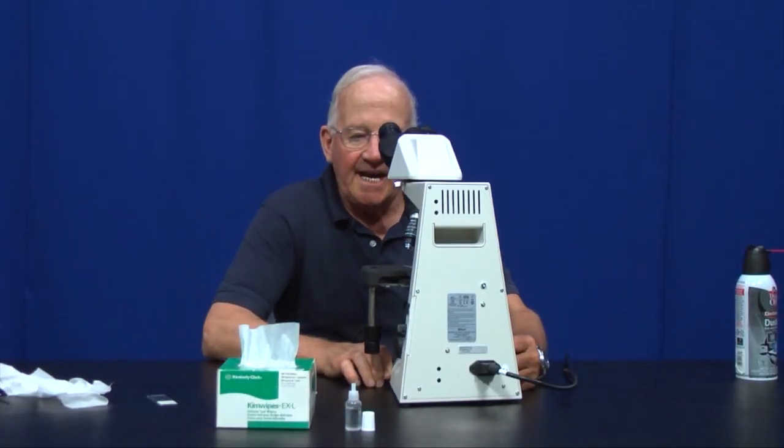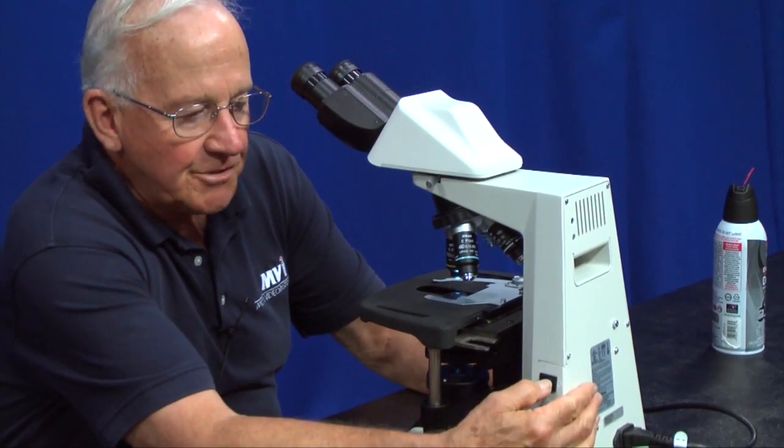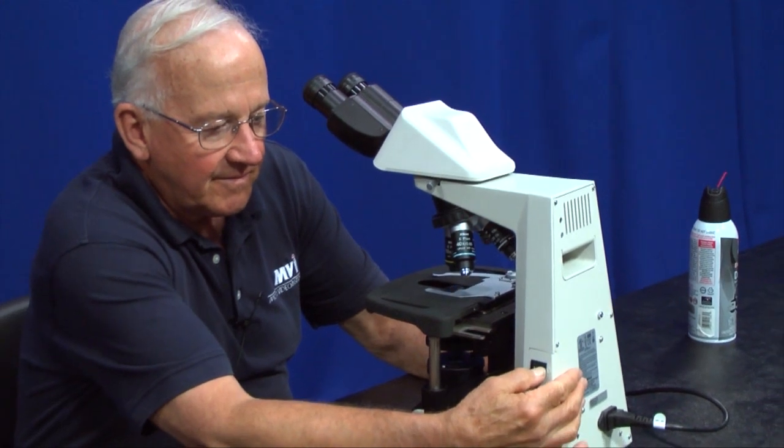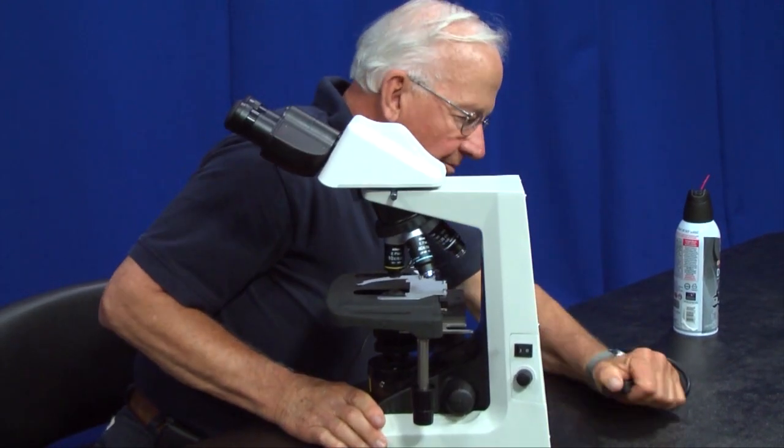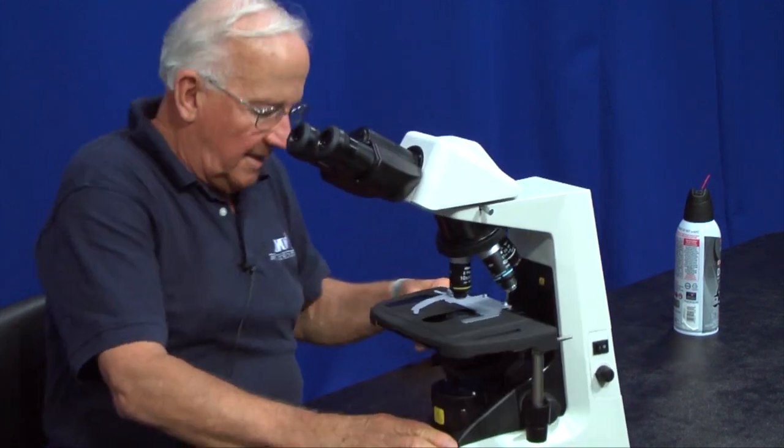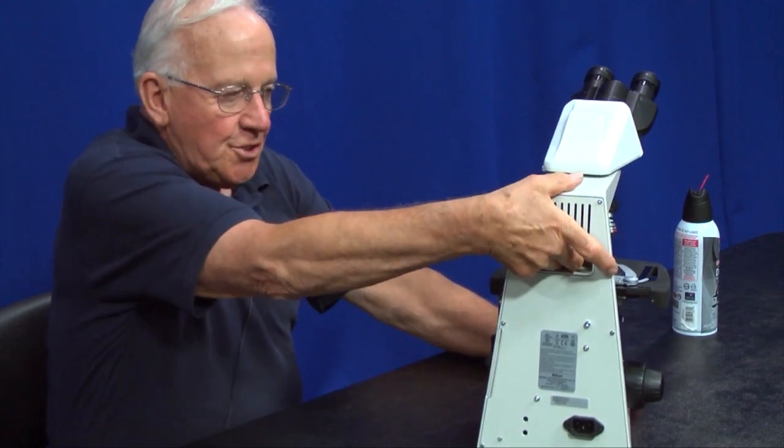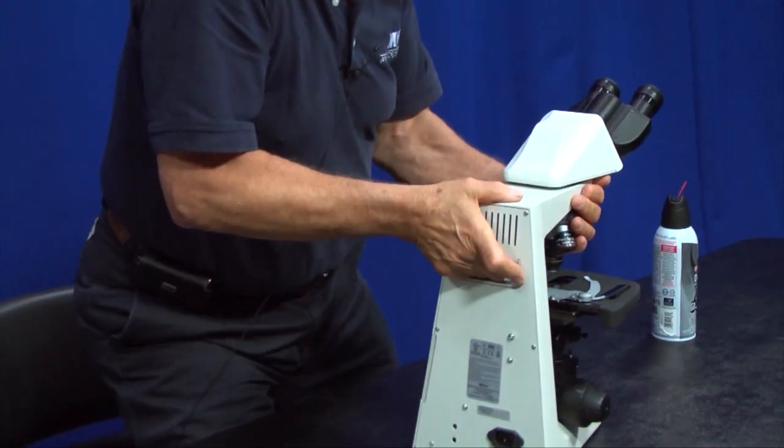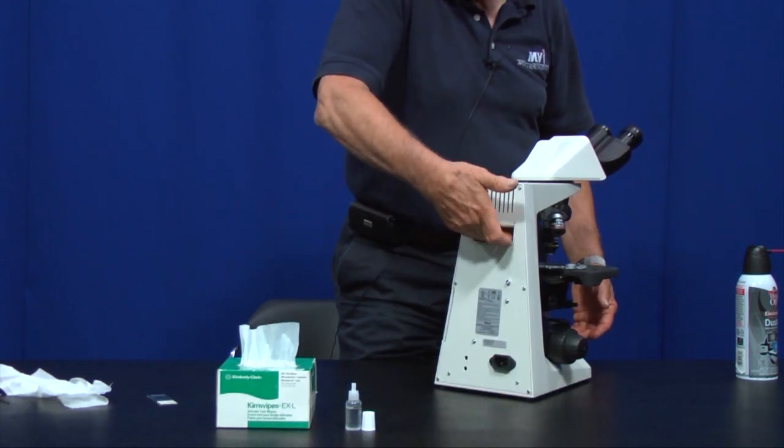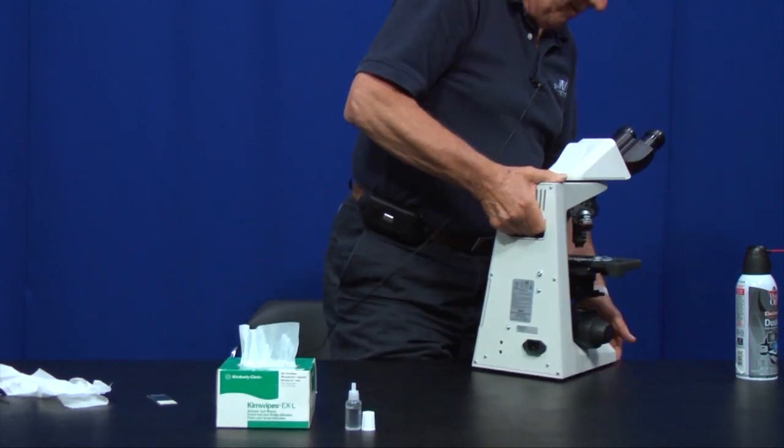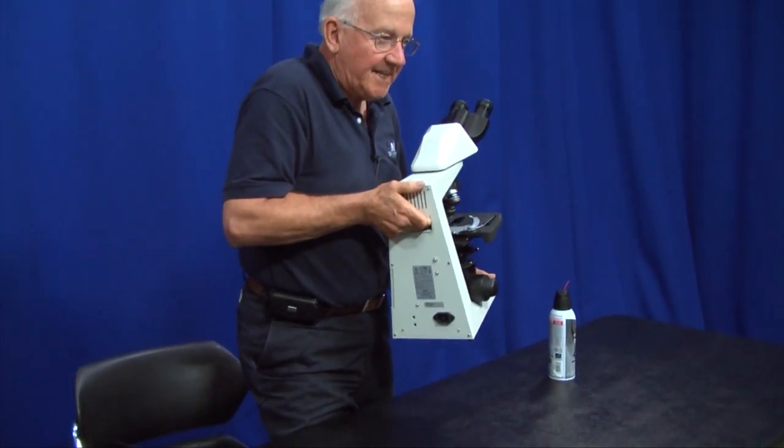Now that I'm through using the microscope for today and we're going to store it perhaps in a cabinet, simply turn the microscope off and unplug it from the back. The microscope comes with a built-in recession here which is used for carrying the microscope. Pick up the microscope with one hand in the rear in this indentation and put the other hand underneath the microscope in the front and carry it this way. Always carry it with two hands.